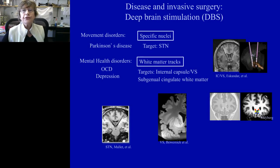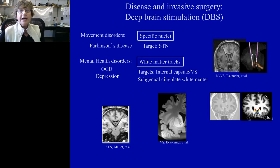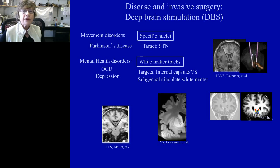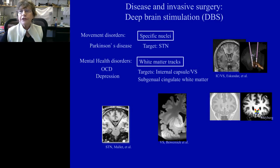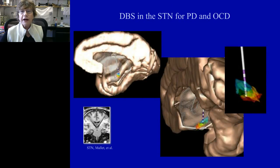Mental health disorders have been focused mainly on OCD and depression, but also on addiction, and the targets in the US are mainly the internal capsule, the ventral striatum, and the subgenual cingulate white matter. I'm going to focus on those. Here's the internal capsule target. We'll start with the STN target, the ventral striatal target, the internal capsule, and the subgenual white matter target. The pathways connecting the cortical pathways and the hyper-direct pathway connect to the STN.